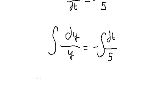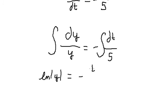After integrating, we get ln of the absolute value of y equals negative t over 5 plus C.